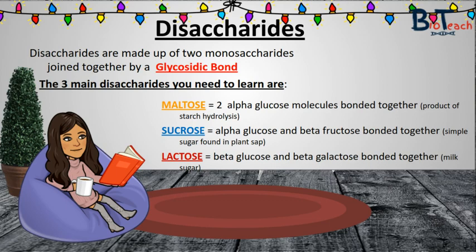Disaccharides are double sugar molecules used as energy sources or as building blocks for polysaccharides. The three disaccharides you need to know are: maltose, composed of two alpha glucose molecules — germinating seeds contain maltose because a plant breaks down its starch stores for food; sucrose, which is table sugar derived from plants such as sugar cane, sugar beet, or maple sap, composed of an alpha glucose and a beta fructose; and lactose, a milk sugar made up of beta glucose and beta galactose. These disaccharides are always held together by a bond known as the glycosidic bond — this is really important to remember for your exam.